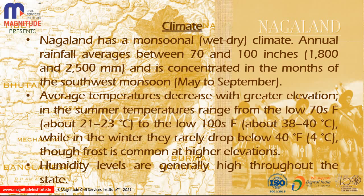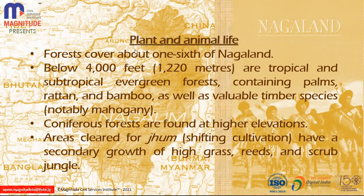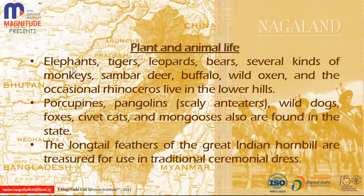The humidity level is high throughout the state. The forest area covers about one-sixth of the total area. Below 4,000 feet, there is tropical and subtropical evergreen forest with palm, rattan, bamboo, and timber species like mahogany. At higher elevations, coniferous forests are found. In terms of wildlife, animals such as porcupines, pangolins, wild dogs, foxes, and wild cats are found in Nagaland.